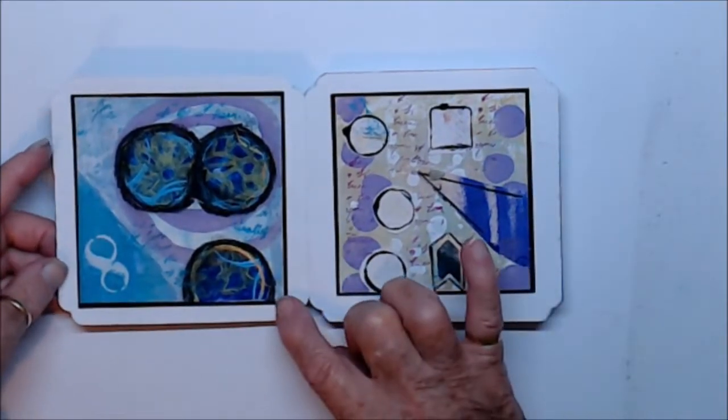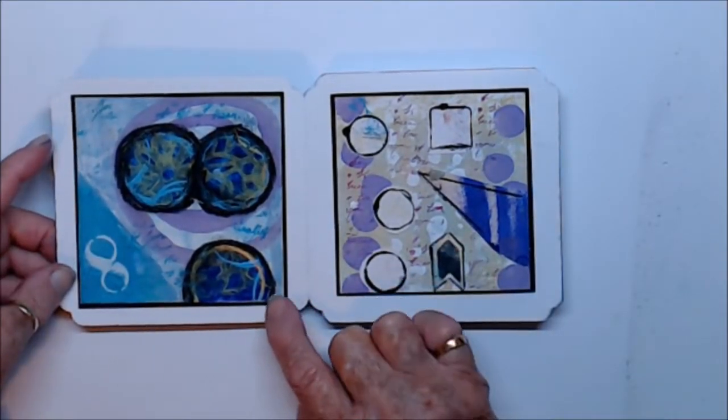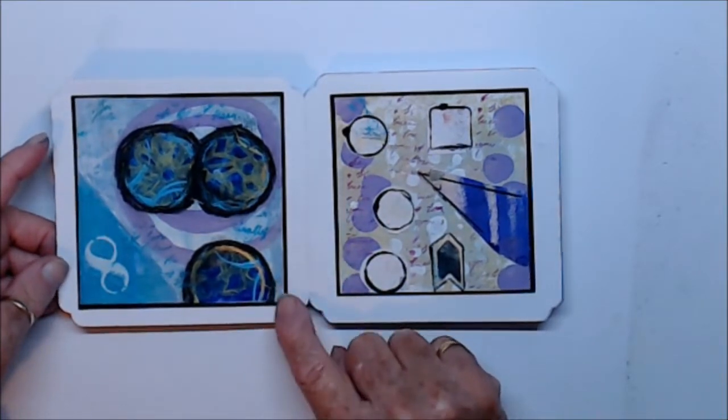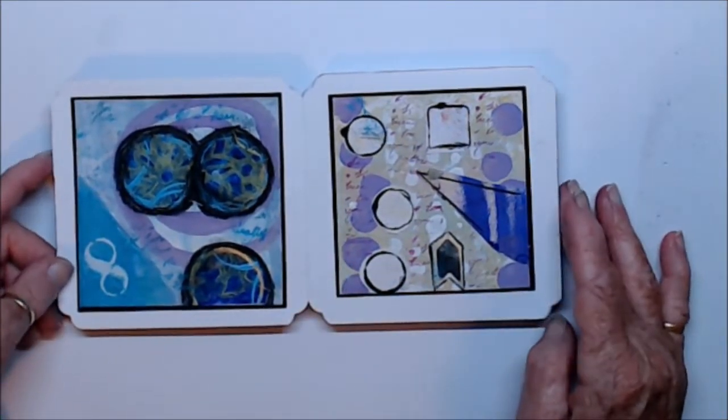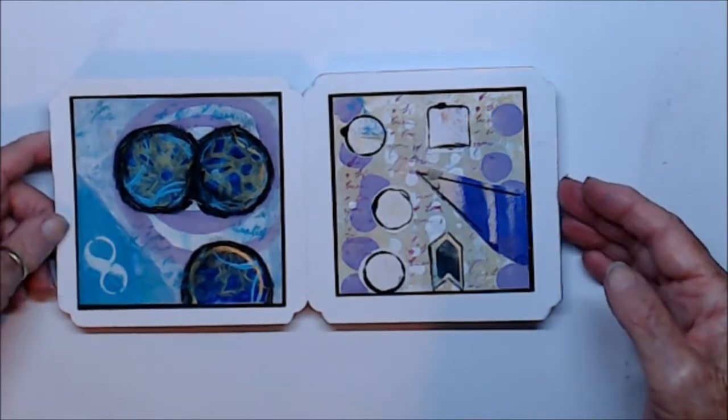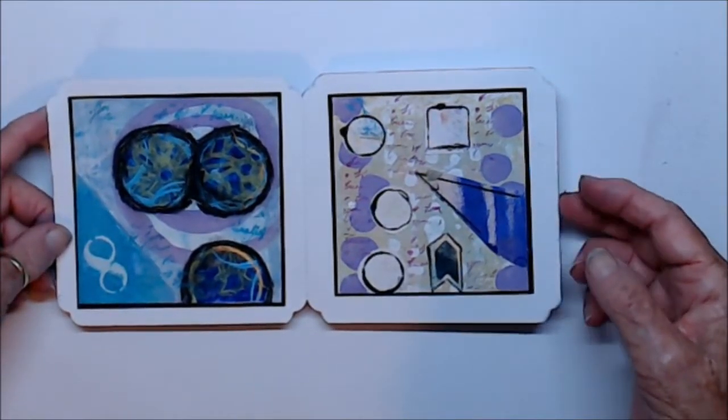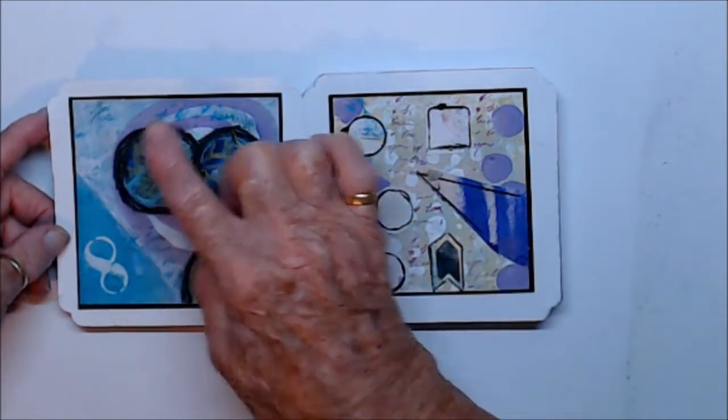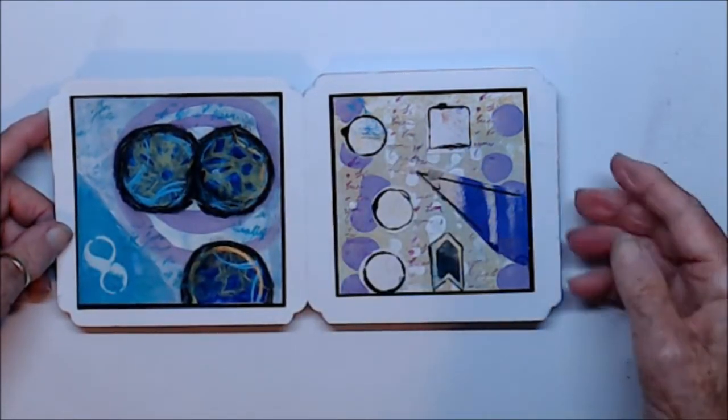And I matted my bits of art onto a black mat. I didn't like it just on the white, so I matted it, and I did a little bit of text stamping in the background.